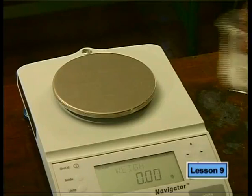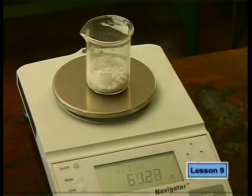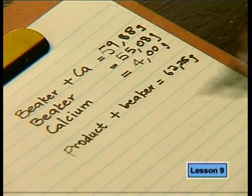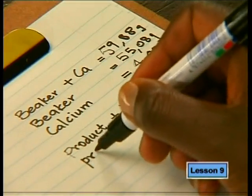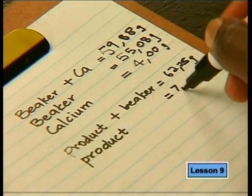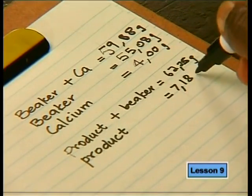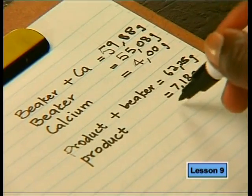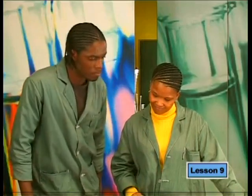Finally, find the mass of the product. If the mass is 5.6 grams, the product is calcium oxide; if close to 7.4 grams, it is calcium hydroxide. The mass of the beaker and product is 62.26 grams; the beaker mass at the start was 55.08 grams. So the mass of the product is 7.18 grams. This is very close to the theoretical value for calcium hydroxide — so the product must be calcium hydroxide.